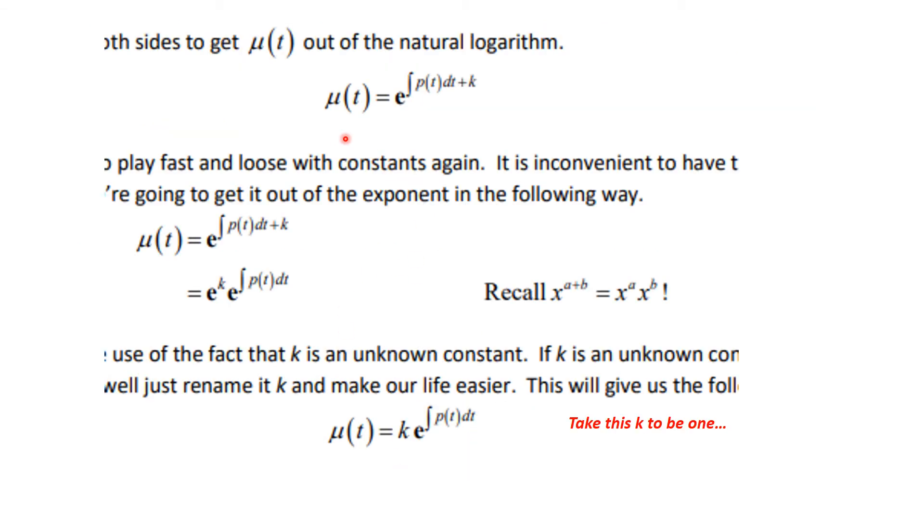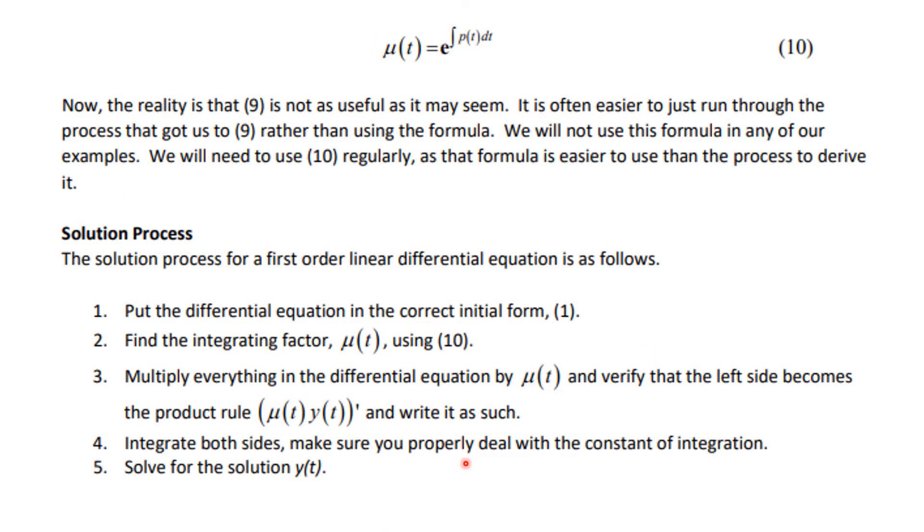When we do that, we find that the integrating factor is mu of t equals e to the integral of p of t dt plus k. Now, that k is another constant, and that would be e to the k, and we can move that k out here being fast and loose with the constants, but we can not have a problem if we take this k to be 1. So, this is the formula for the integrating factor once you have it in standard form.